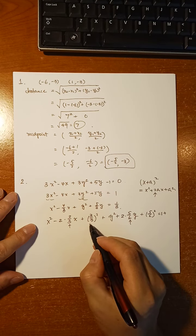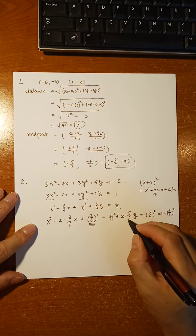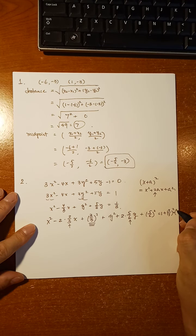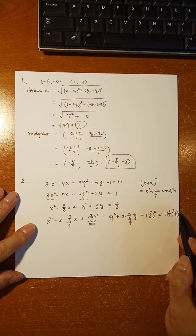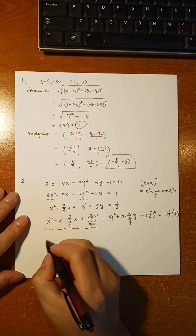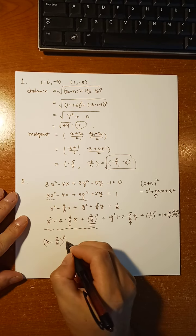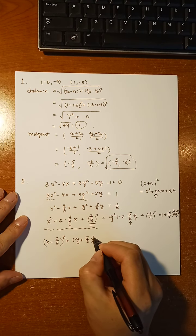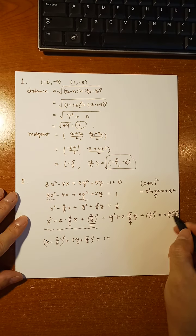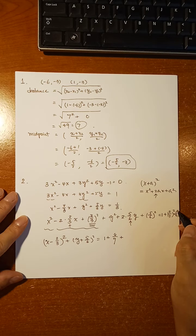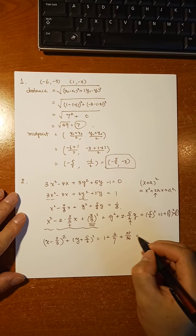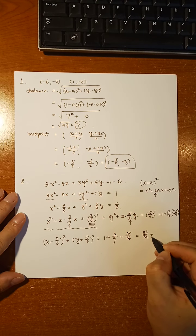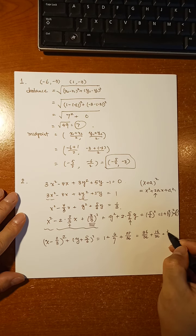So on the right side, we have 1 over 3 plus (2 over 3) squared plus (5 over 6) squared. The left side becomes (x minus 2 over 3) squared plus (y plus 5 over 6) squared. On the right side: (2 over 3) squared is 4 over 9, and (5 over 6) squared is 25 over 36. Converting to 36ths: 4 over 9 is 16 over 36, and we have 25 over 36.